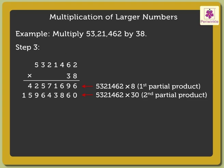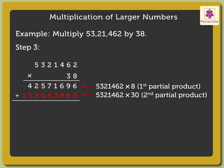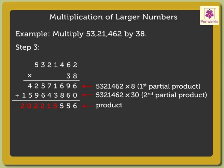Step 3: Now, add both the partial products obtained — that is 4,25,71,696 plus 15,96,43,860 — to get the answer, which is equal to 20,22,15,556.